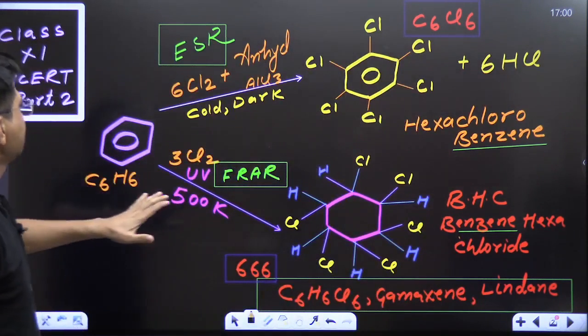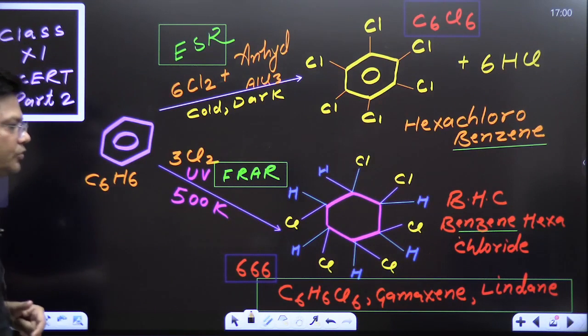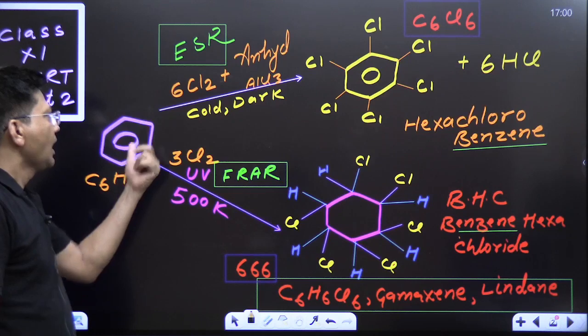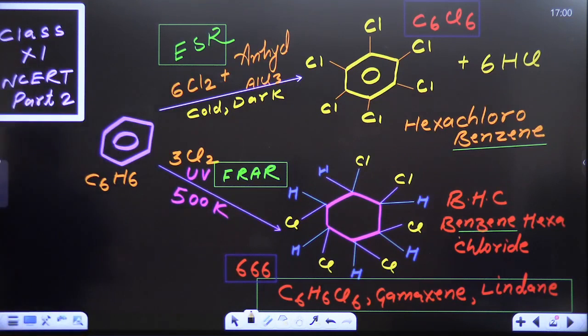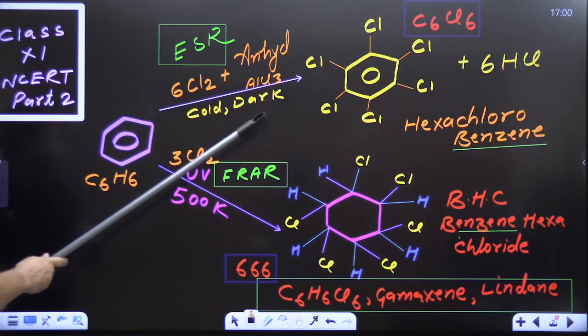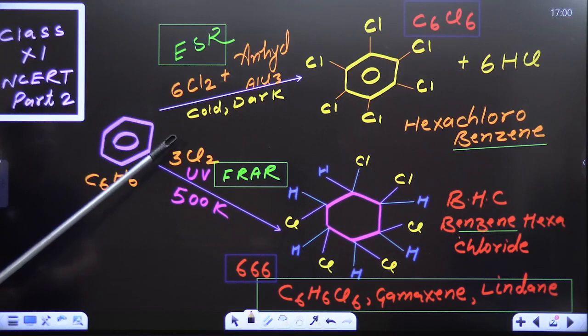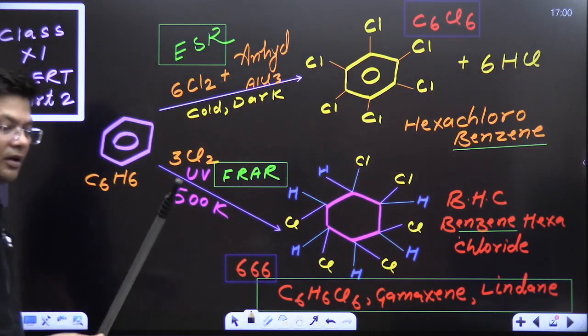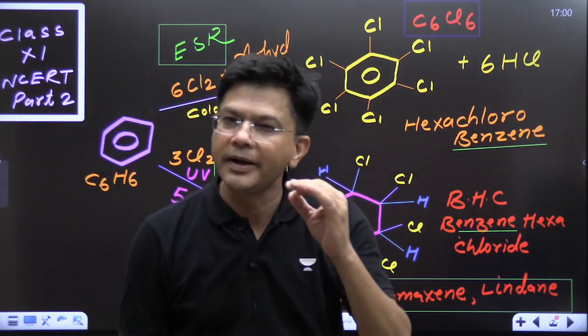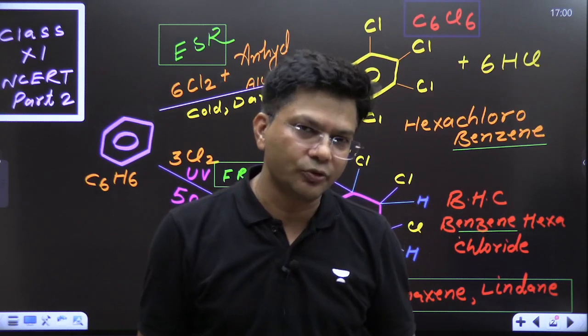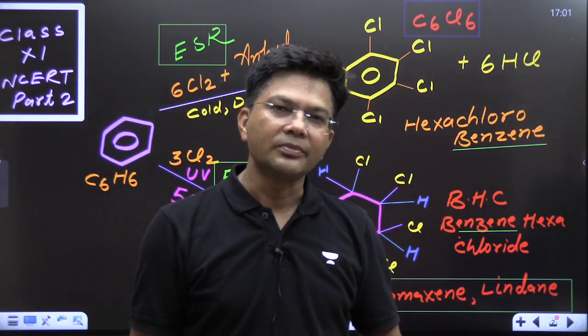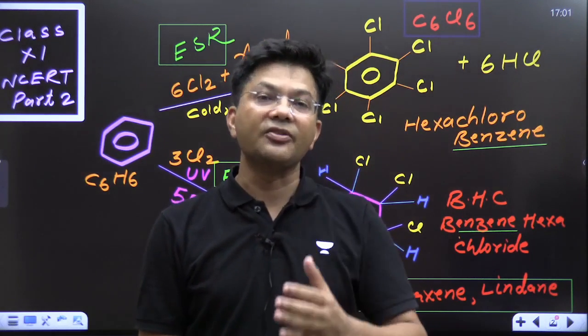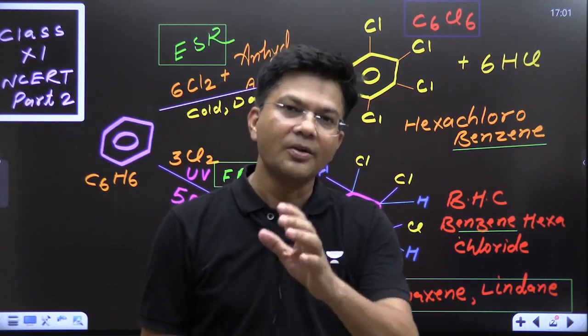This is the well-known reaction given in class 11th NCERT part 2. The reactant is benzene and the reagent is chlorine. The reactant as well as the reagent both are common over here. You can see very clearly this is the reactant for both the two reactions. This is chlorine and this is chlorine. So what's the difference and why is it confusing?